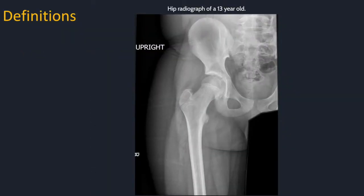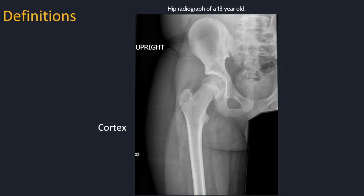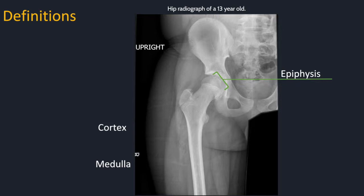Here are a few MSK-specific definitions that will help you get started in describing radiographs. This is a normal hip of a 13-year-old. The cortex is the outer part of the bone composed of compact bone — the word cortex derives from the Latin for bark, like on a tree. The medulla is the inner cavity of the bone. The epiphysis is the end of the bone; it starts as cartilage and grows and ossifies to contribute to longitudinal length of a bone, and at skeletal maturity it will be covered in cartilage. The physis is the area of endochondral ossification, also known as the growth plate.